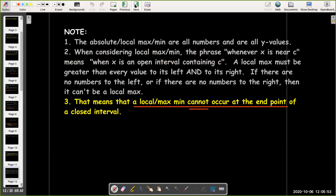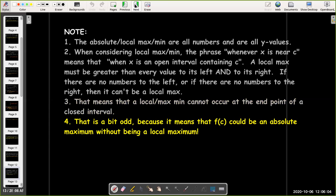For example, if you're at the end point of a closed interval, you cannot have a local max or a local min there, which is a little bit odd because you can have an absolute max or an absolute min. So you might find yourself in a situation where a number f(c) could be an absolute maximum without being a local maximum. So that's a little counterintuitive, but that's what the definition tells us.